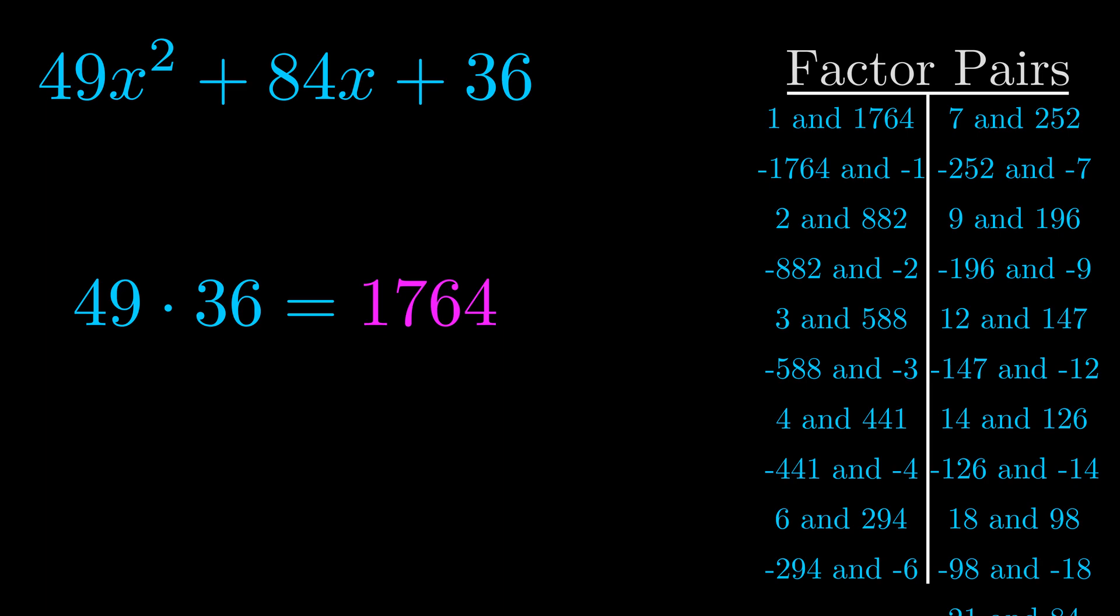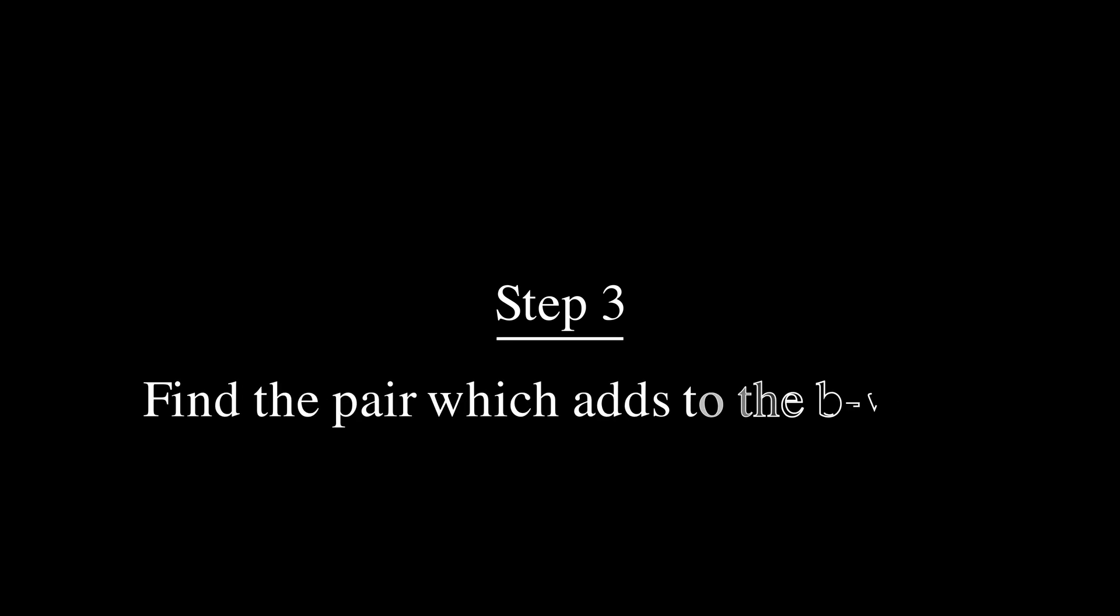Now once you have these factor pairs, the goal is to find which of these pairs adds to the b value. The b value is the coefficient on the x term.